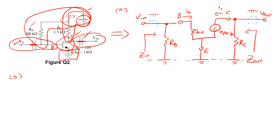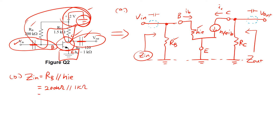For part B, when we want to find the input impedance of this circuit, notice that V-in is pointing into RB first, and then behind RB there's another resistor called H-ie in parallel to it. After that we don't see any more resistors at the input side. Therefore, the input impedance is just RB in parallel with H-ie. If we calculate this out, it's 200k in parallel with H-ie which is 1k, giving a value of 995 ohms for Z-in.